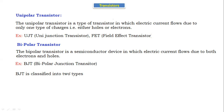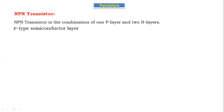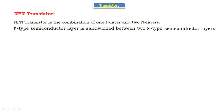BJT is classified into two types: NPN and PNP transistors. In the NPN transistor, it is a combination of one P layer and two N layers — the P-type semiconductor layer is sandwiched between two N-type semiconductor layers. The structure of the NPN transistor has two N layers and one P layer, with the P layer sandwiched between the two N layers.